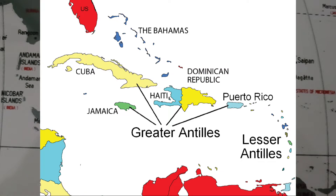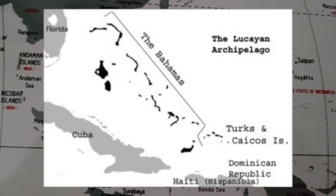The Caribbean islands can be broken up into three groups. The first group is the Greater Antilles, which consists of the largest Caribbean islands. This is where you'll find countries like Cuba, Jamaica, Haiti, and the Dominican Republic, in addition to the U.S. territory of Puerto Rico. The Lesser Antilles are the small islands in the south, where you'll find countries like Antigua and Barbuda, St. Vincent and the Grenadines, and Dominica, as well as dependencies like the Virgin Islands, Aruba, Martinique, and Curacao. The third island group is the Lucayan Archipelago, where the Bahamas and the Turks and Caicos Islands are located.